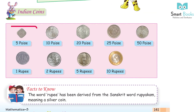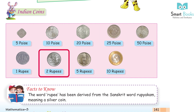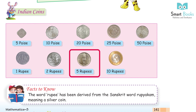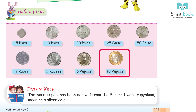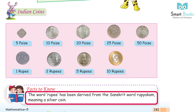Indian coins: 5 paise, 10 paise, 20 paise, 25 paise, 50 paise, 1 rupee, 2 rupees, 5 rupees, 10 rupees. Do you know? The word rupee has been derived from the Sanskrit word 'rupiakam', meaning a silver coin.